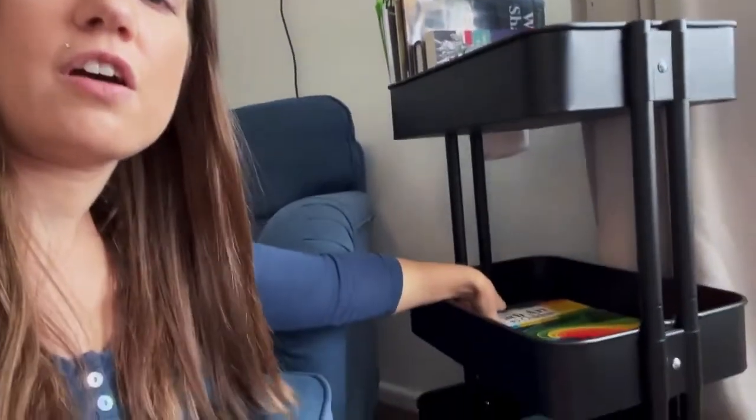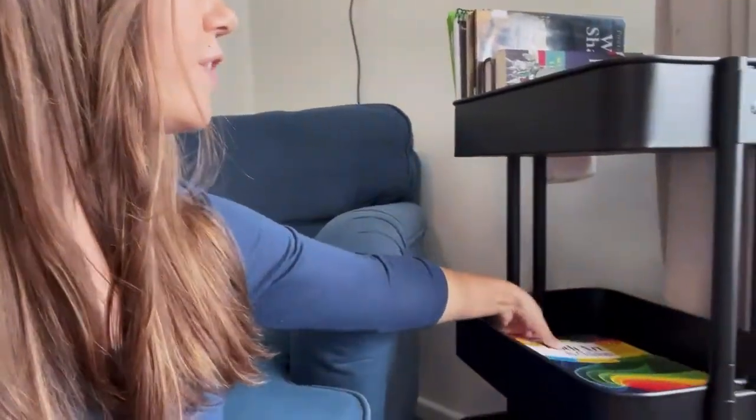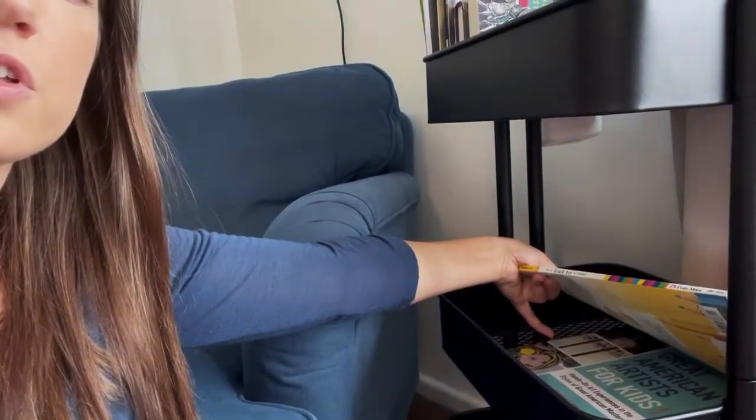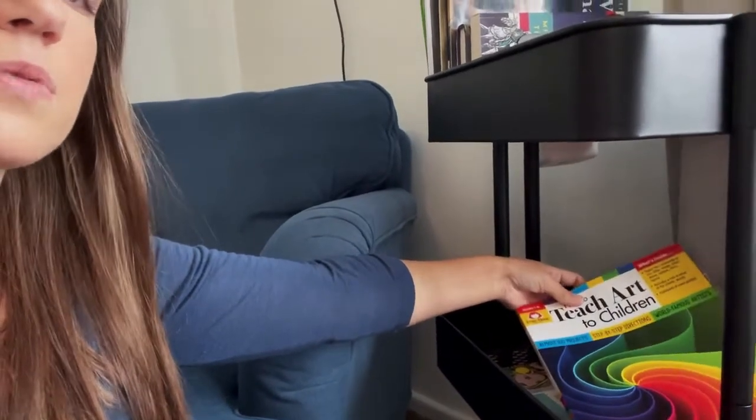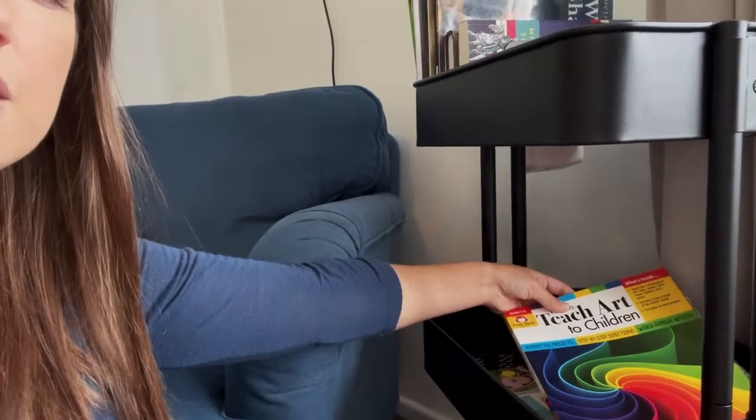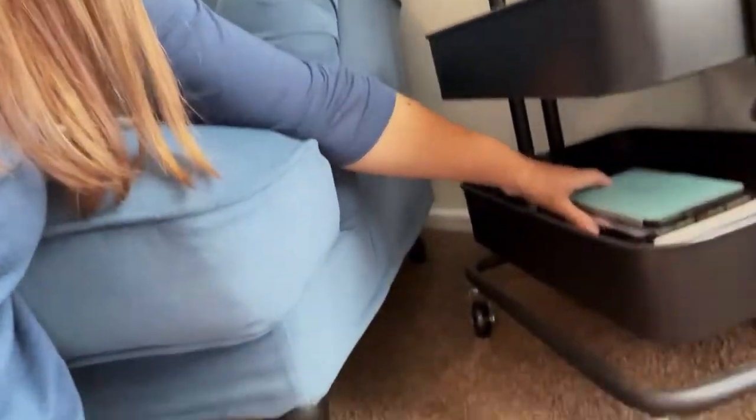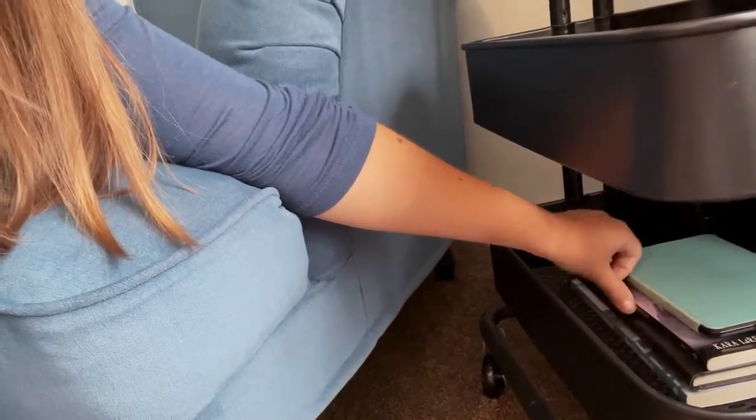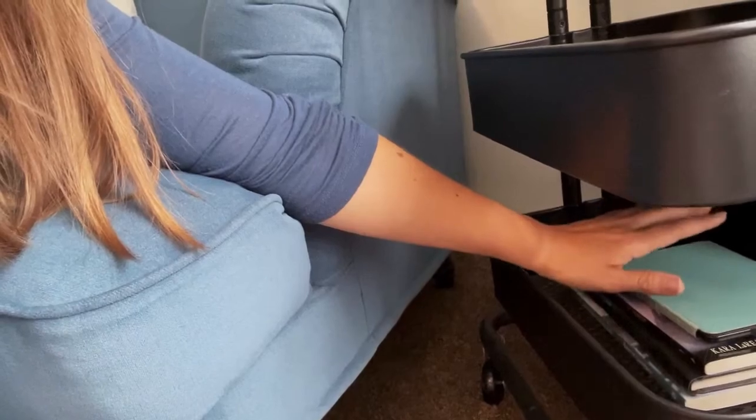On the next shelf, I have both of the books that we're using for art. This one was scheduled with Build Your Library Five. And this one is something I picked up just to go over the elements of art. And then way down at the bottom, I have just some advanced reader copies of books that I have gotten in the mail that I'm supposed to be reading and reviewing.